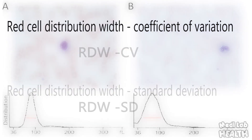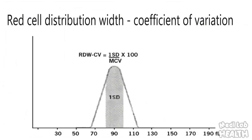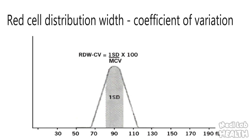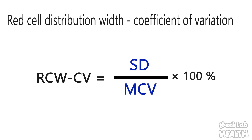The red cell distribution width coefficient of variation is a calculation based on both the width of the distribution curve and the mean cell size. It is calculated by dividing the standard deviation of the mean cell size by the MCV, or mean corpuscular volume, of the red cells and multiplying by 100 to convert to a percentage. The normal range for the RDW-CV is approximately 11% to 15%.